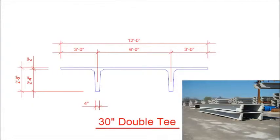Let's take a look at an example right now. We're going to take a look at a standard bay of double Ts. In case you're unfamiliar with precast, double Ts on a parking garage are what you actually drive on. They can be held up by columns and beams. What I have here is an example of what a double T looks like — a rough schematic with its dimensions, as well as a picture of the double T in the bottom right.